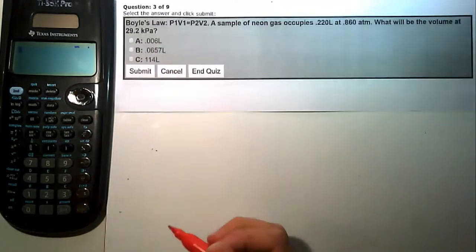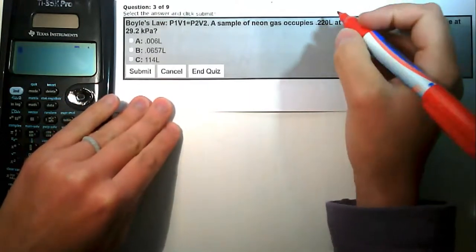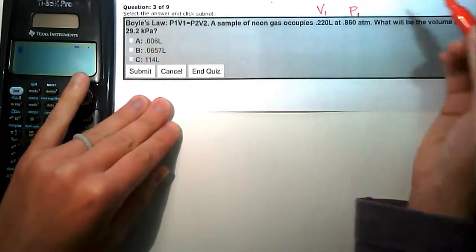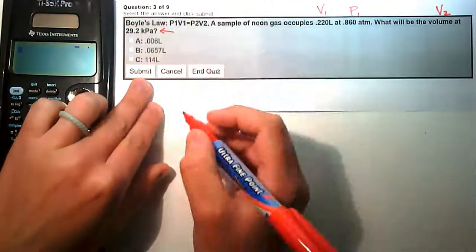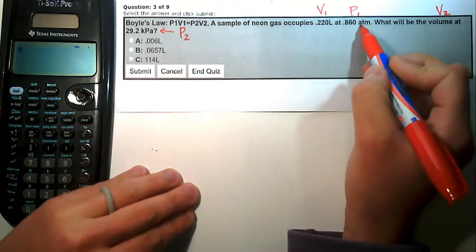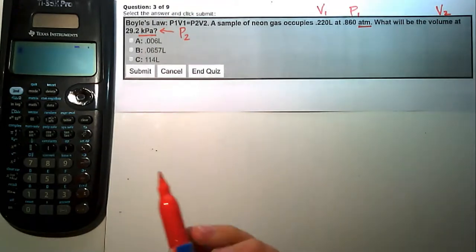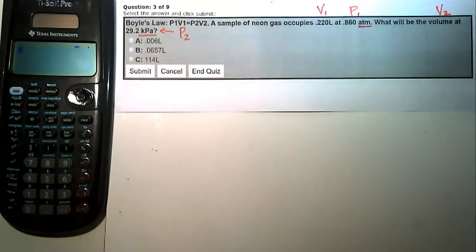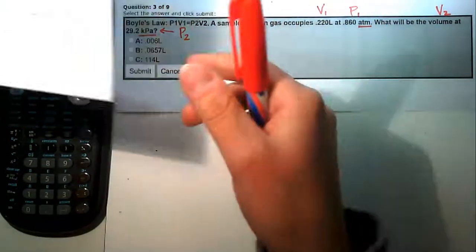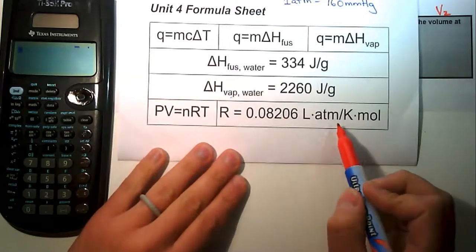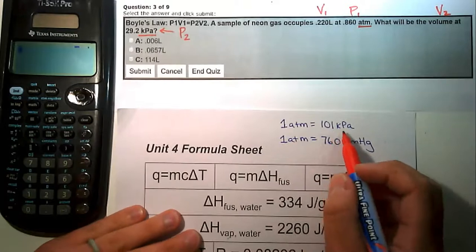Problem three: a sample of neon gas occupies 0.220 liters at 0.860 ATM — those are our V1 and P1 values. We want the volume V2 at 29.2 kilopascals, which is our P2. But P2 is in kilopascals while P1 is in ATM, so before plugging into the equation, we need to convert our units of pressure to be the same.